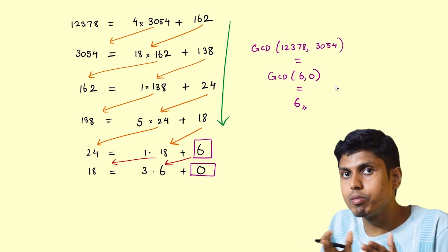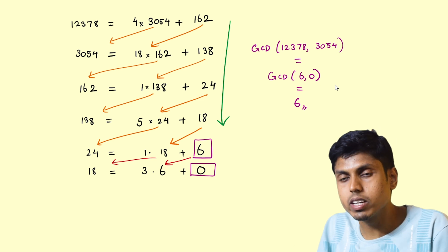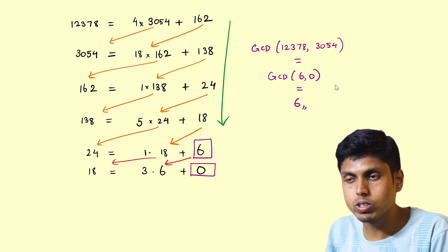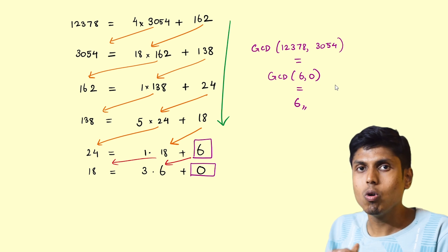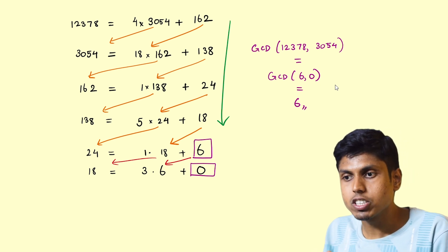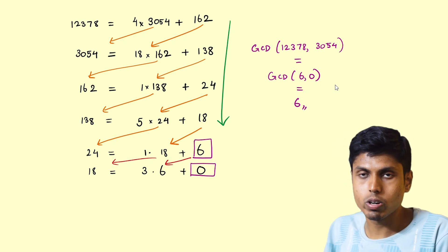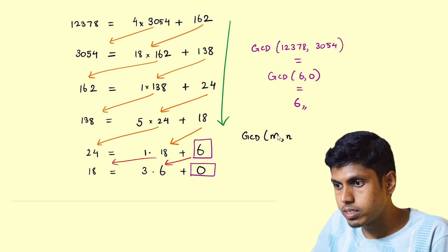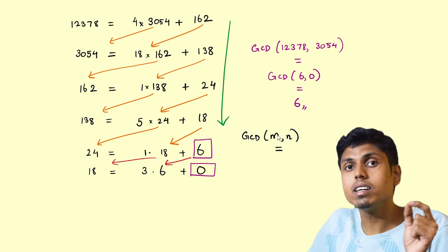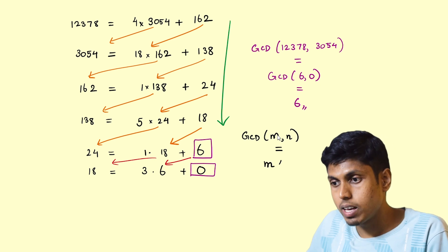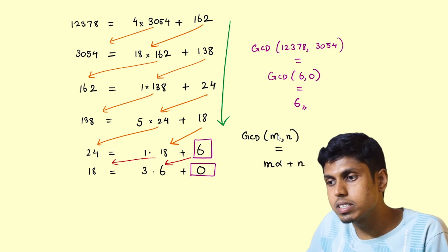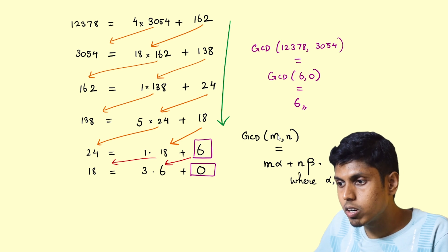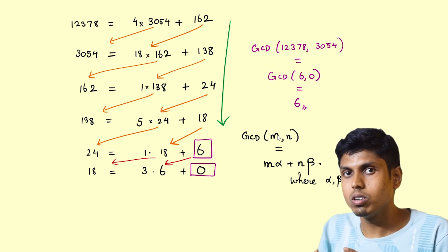This is how one could solve a GCD problem using Euclidean algorithm. But a more clever application of this Euclidean algorithm is the fact that GCD of two numbers, say m and n, can be written as a linear combination of m and n, say m times alpha plus n times beta, where alpha and beta are integers. This is what I mean by linear combination.